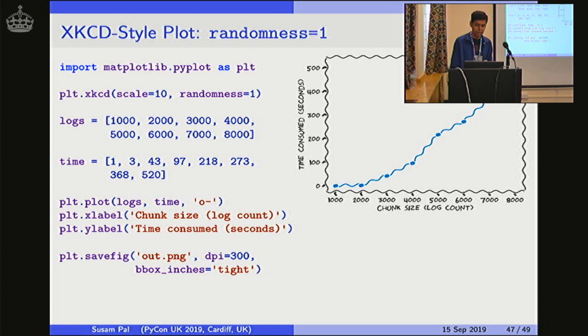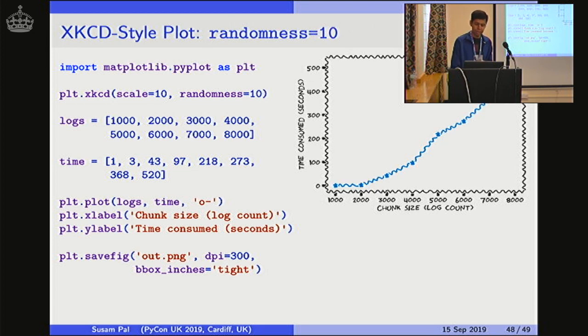Finally, the randomness. To make the randomness apparent, I increase the scale as well, so that you can see the wiggles more prominently. So with a randomness of 1, the wiggles look very regular. There doesn't appear to be much randomness. But if we increase the randomness to 10, they are more irregular now compared to the one in the previous slide.